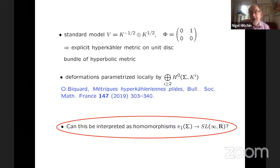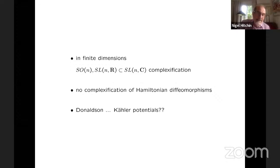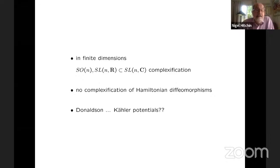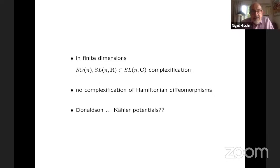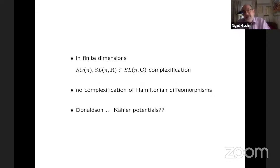So what is the problem? Well, the problem is that in finite dimensions, the compact group and the non-compact group — the different real forms — are real forms of a complexification, which is a perfectly well-defined group. And there's no complexification of a group of Hamiltonian diffeomorphisms. We can't do the same procedure as happens in Higgs bundle theory in finite dimensions.